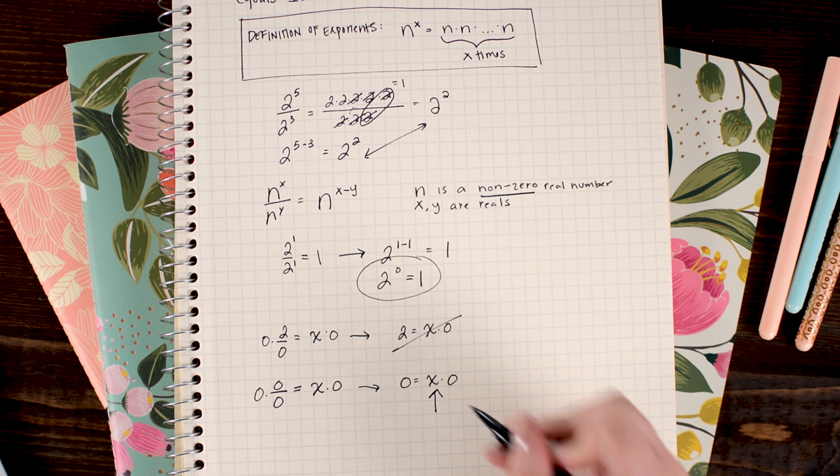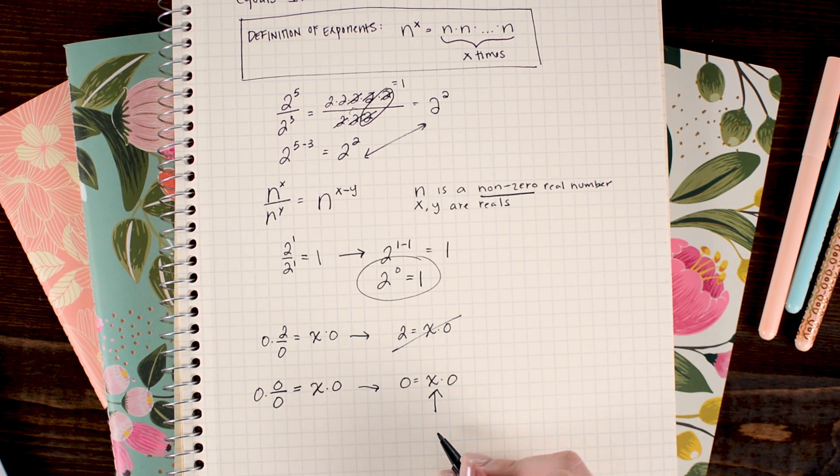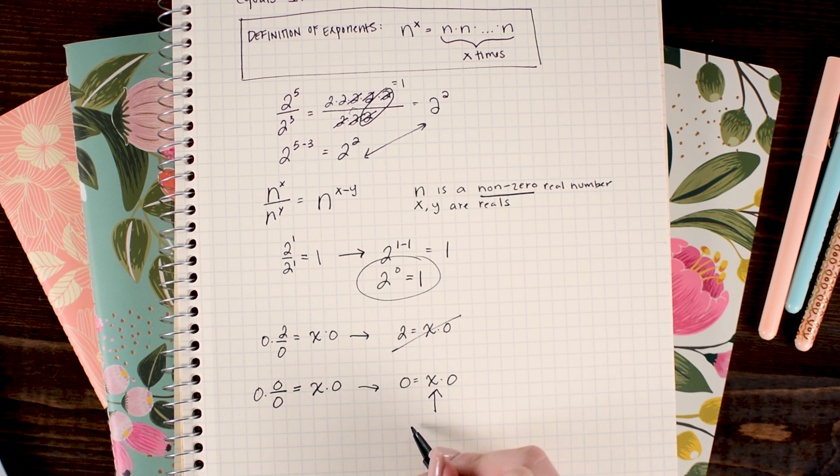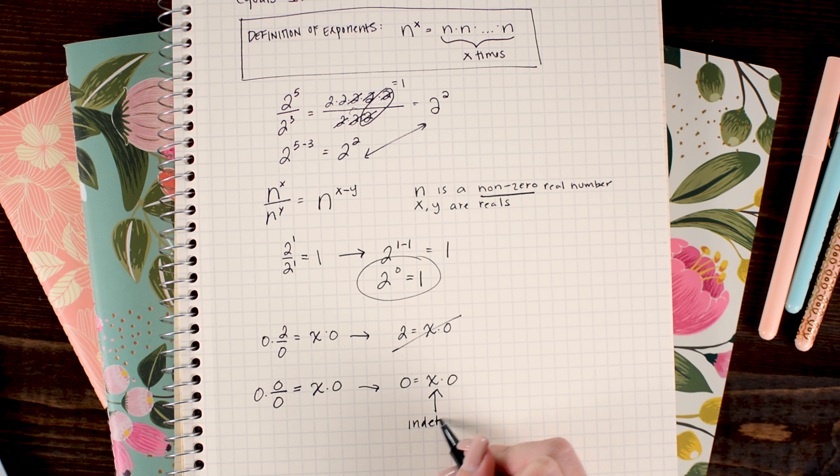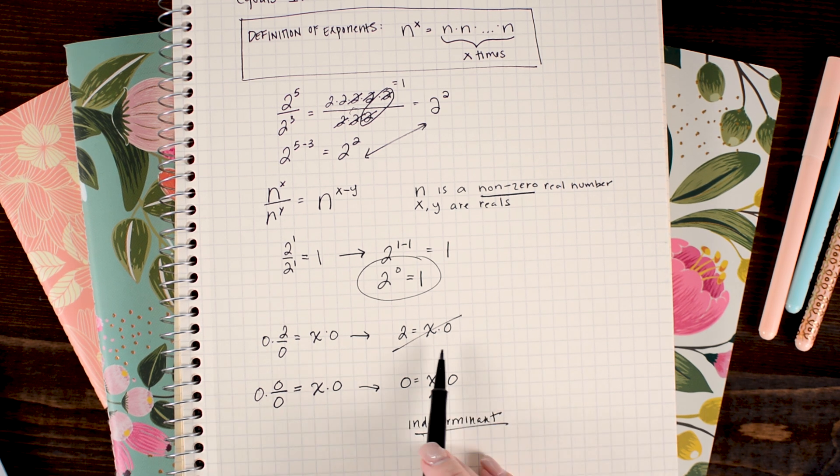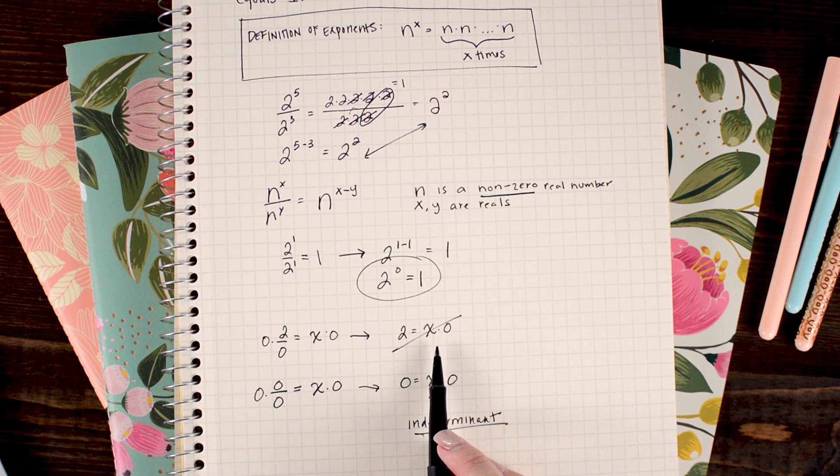So that means that we cannot determine what x is, and in this scenario we say that 0 divided by 0 is indeterminate. Whereas up here when I just couldn't divide it, there's not one solution that worked. In that scenario x was undefined. So now it's indeterminate, before it was undefined.